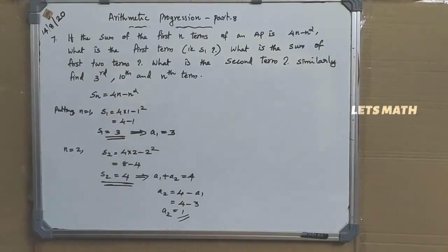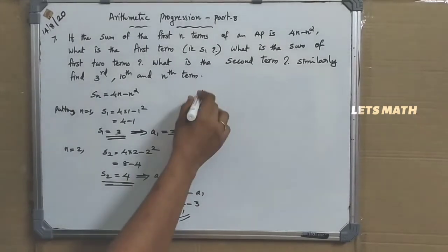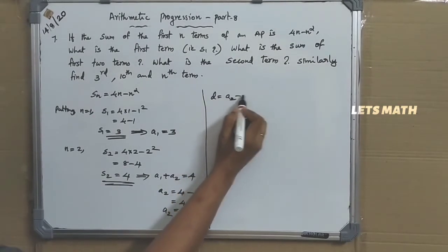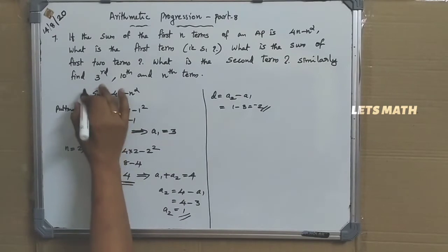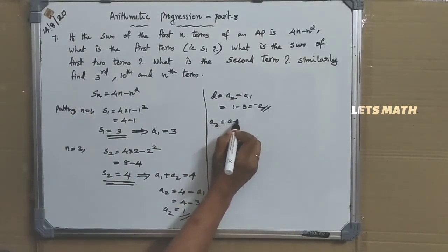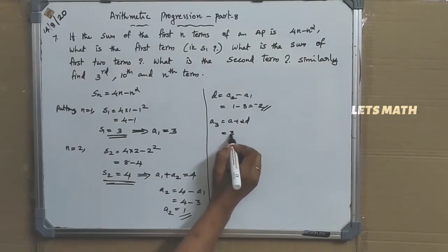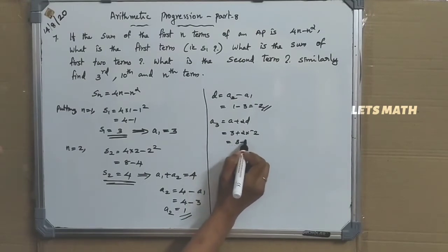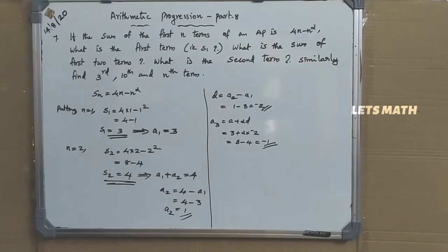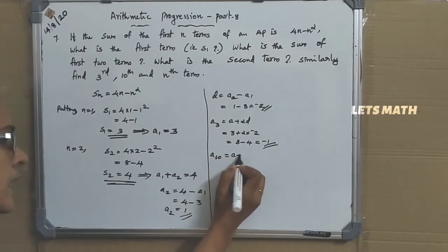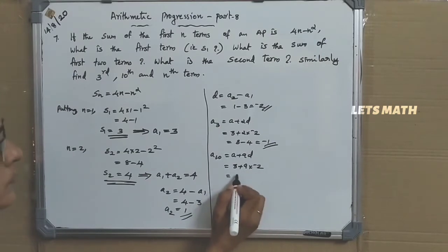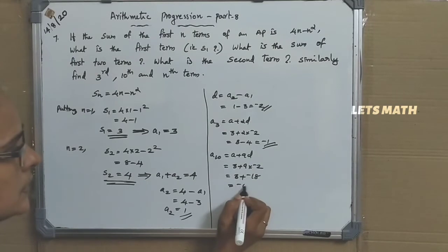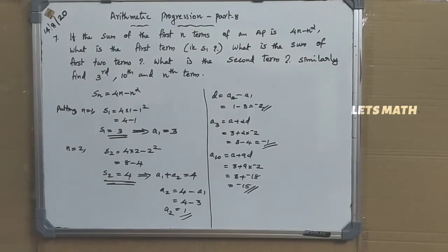To find the third term: common difference D equals second term minus first term, that is 1 minus 3 equal to negative 2. A3 equals A plus 2D, that is 3 plus 2 into negative 2, giving 3 minus 4, which equals negative 1. For A10: A10 equals A plus 9D, that is 3 plus 9 into negative 2, giving 3 minus 18, so A10 equal to negative 15.